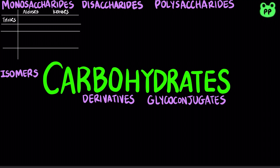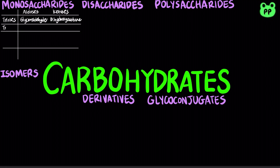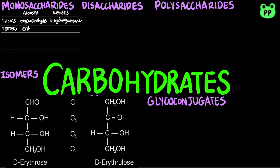A triose contains three carbon atoms, such as glyceraldehyde, which is an aldose, and dihydroxyacetone, which is a ketose. A tetrose contains four carbon atoms, such as erythrose, which is an aldose, and erythrulose, which is a ketose.